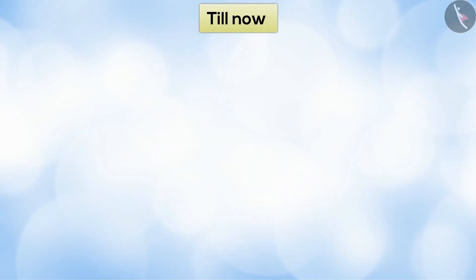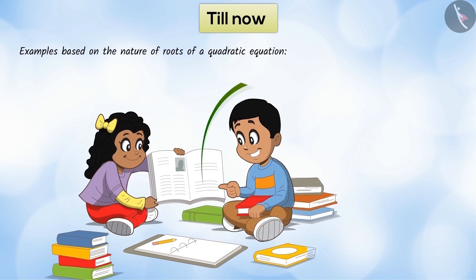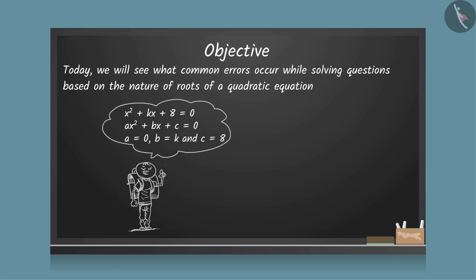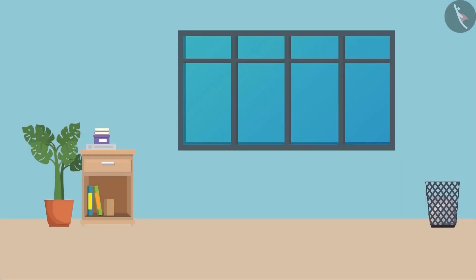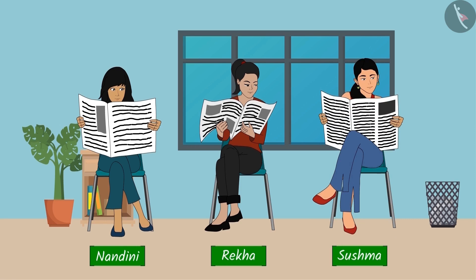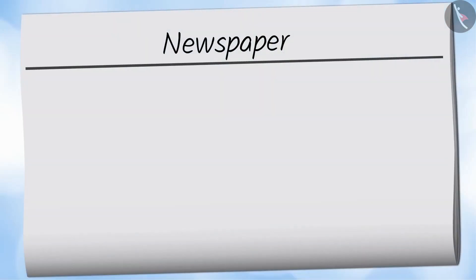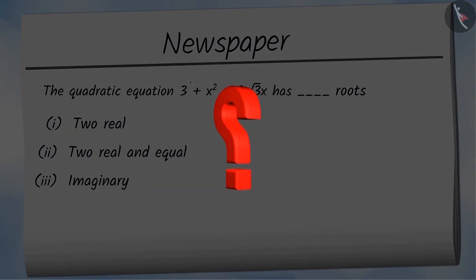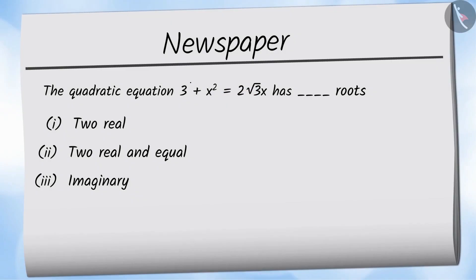In the previous video, we saw some interesting examples based on the nature of roots of a quadratic equation. Today, we will see what common errors occur while solving such questions. Nandini, Rekha, and Sushma saw a question given in the newspaper, with a note saying anybody solving the question correctly will win a reward. Sushma, Rekha, and Nandini select options 1, 2, and 3 respectively. Can you tell whose answer is correct and why? Pause the video to solve the question and then match your answer.